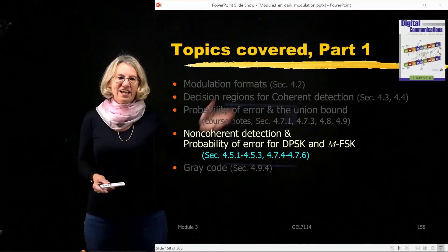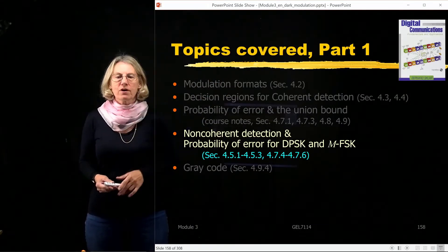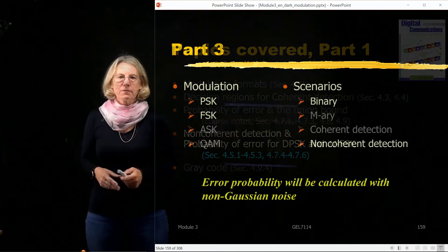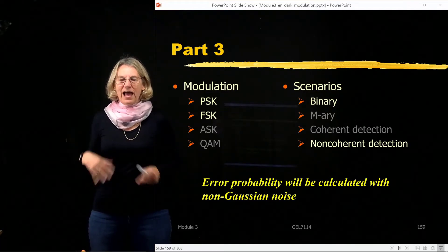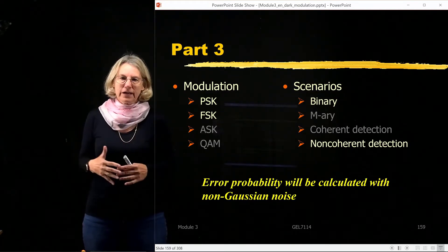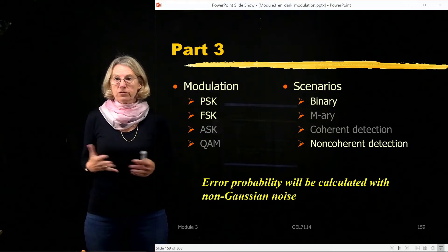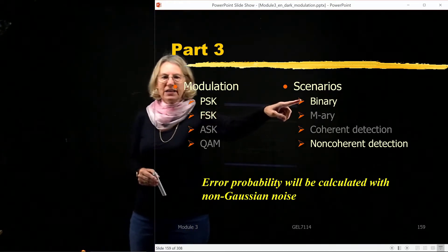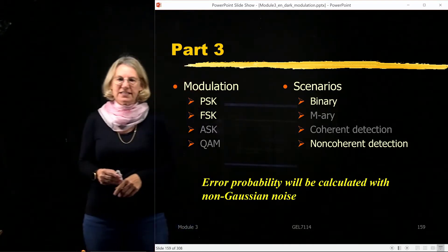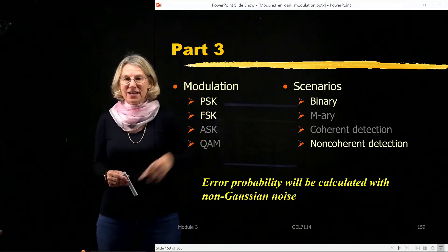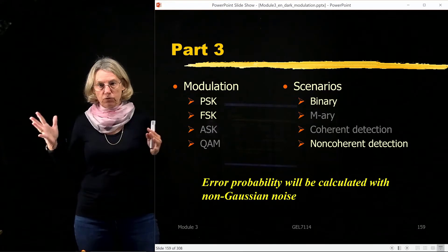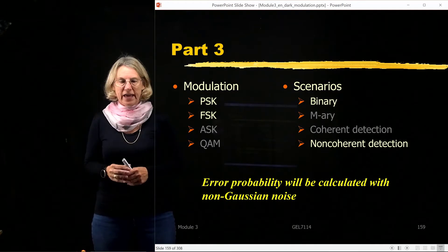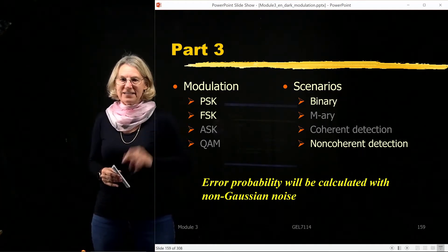So non-coherent detection is covered in Chapter 4 of our textbook from Sklar. So if you'll remember, I gave an outline of what it is that we're going to be covering in Module 3. And what we're covering is PSK and FSK, only the binary cases when we look at non-coherent detection. So when we did coherent detection, we used M-ary and we looked at the full-blown.